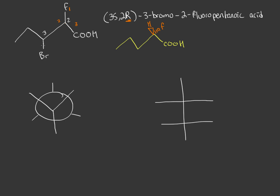Now for the bromine carbon, we do the same thing. This carbon is connected to bromine, so that's number one. It's connected to two carbons, and the carbon with fluorine on it takes priority over the one with just hydrogens, so that's two and three. So it's spinning this way — that's an S, which is correct. So the bromine is pointing out towards us and the hydrogen is back.